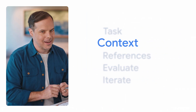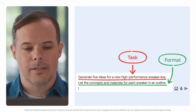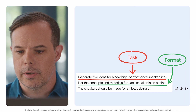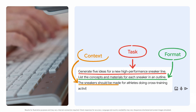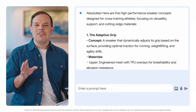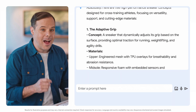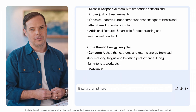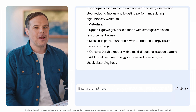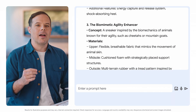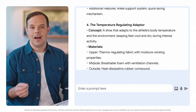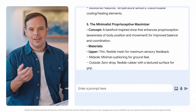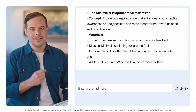Let's add some context: the sneakers should be made for athletes doing cross-training activities. With the new information, Gemini created five new sneaker ideas that are more suited to our specific goals. Remember, getting tailored outputs means we need to provide a Gen AI tool with more details and context in order to generate more useful results. Success is all about the details.